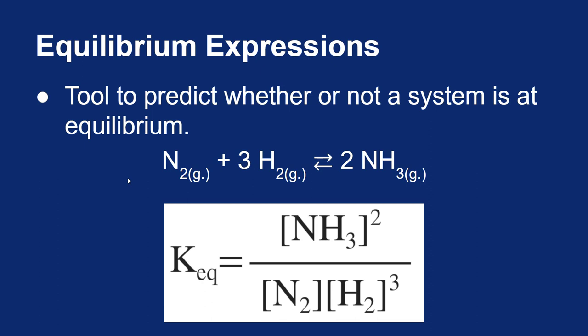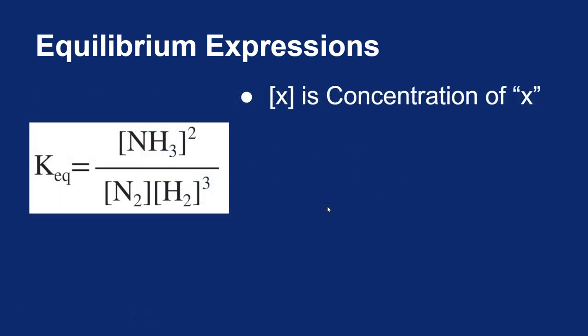So we can get these exponents directly from the balanced equation. And we always write them by putting the products on top and the reactants on the bottom. So again, when you see those square brackets, it's referring to concentration. And we generally measure our concentrations in molarity.